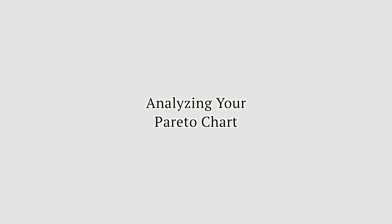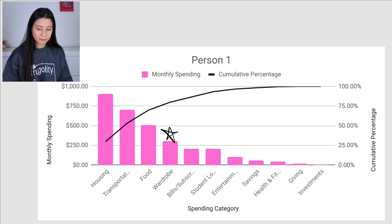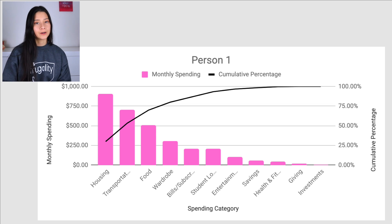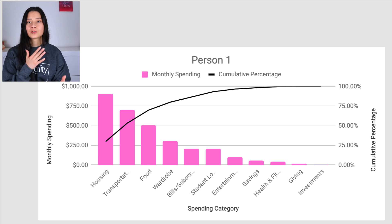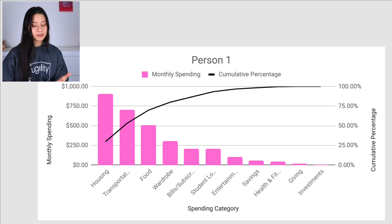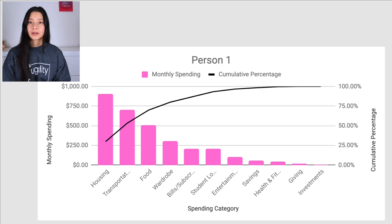For this particular person, a lot of their money is going towards housing, transportation, food, and maybe wardrobe. The main thing is to figure out whether what you're seeing on this chart aligns with your financial goals. If it doesn't, you can still change things; if it does, you can look for ways to improve or achieve a more balanced lifestyle. This person is spending a lot on housing, transportation, and food, but not really saving or investing. They have student loans but don't seem to be making a concerted effort to pay them off rapidly.